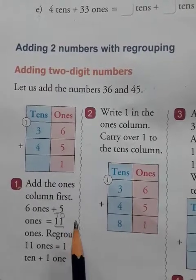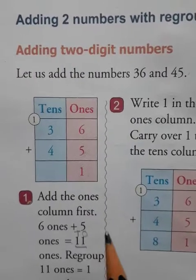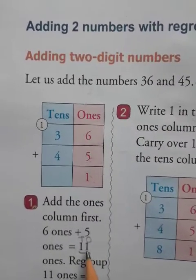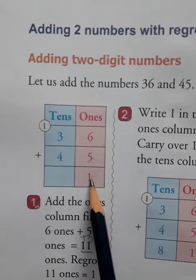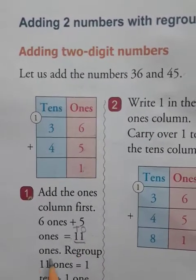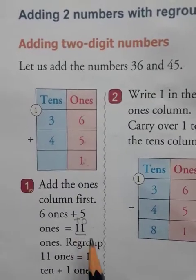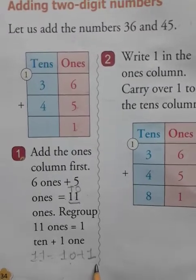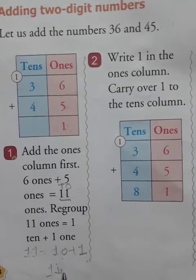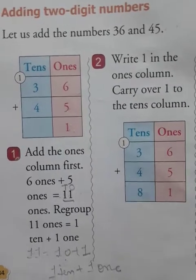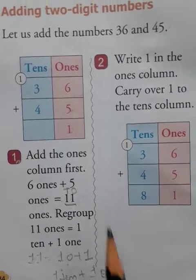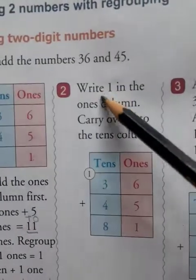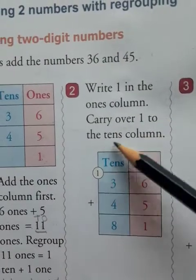You always add ones place to ones, and you always write the sum of ones in the ones place. You can see this 1 in the ones place — you write this 1 here. And this 10: you know that we can write 11 as 10 plus 1. This 10 means 1 ten plus 1 one. Write one in the ones column and carry over one to the tens column.